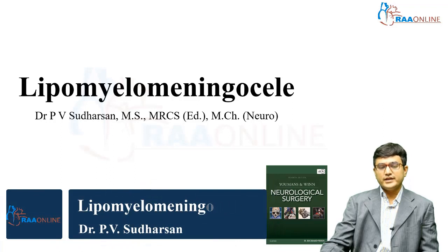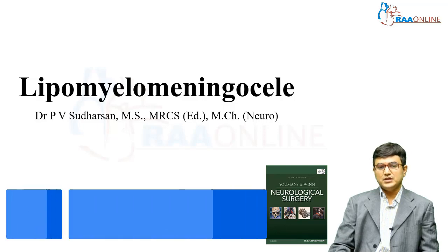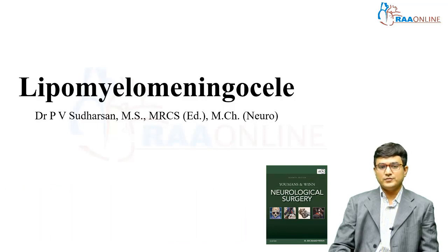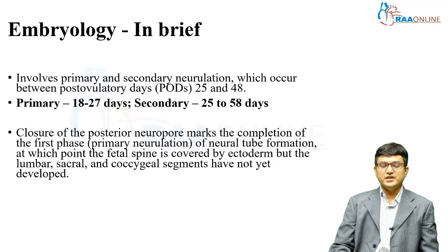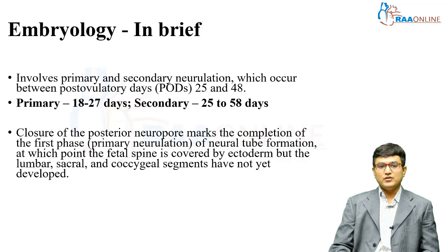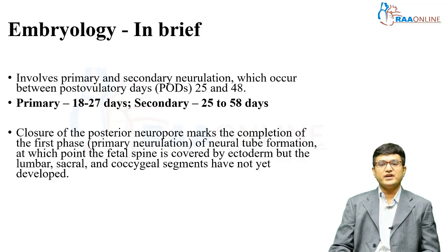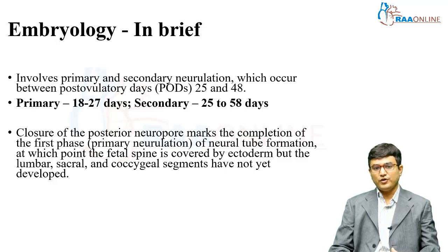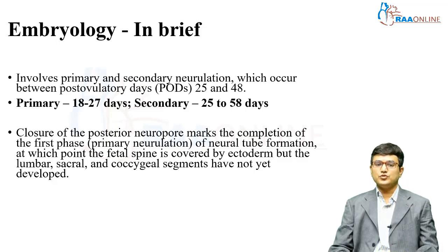Welcome to RA Online. Today's topic will be on lipomyelomeningocele, which is one of the forms of spinal dysraphism. To briefly cover embryology, development of the spinal cord involves two processes: primary and secondary neurulation. Primary neurulation occurs between post-conceptional days 25 and 48, forming the actual neural tube and involving the closure of the anterior and posterior neuropore.